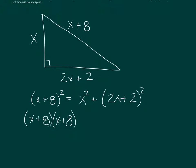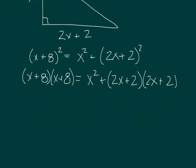That's x plus 8 times x plus 8, and on the right-hand side we're going to have 2x plus 2 times 2x plus 2. So let's foil out what this is.